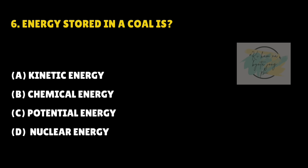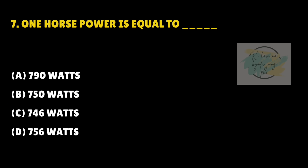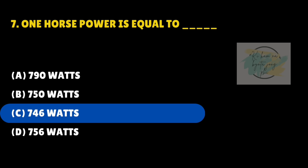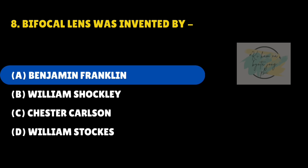Energy stored in coal is — answer is B — Chemical energy. One horsepower is equal to — answer is C — 746 watts. Bifocal lens was invented by — answer is A — Benjamin Franklin.